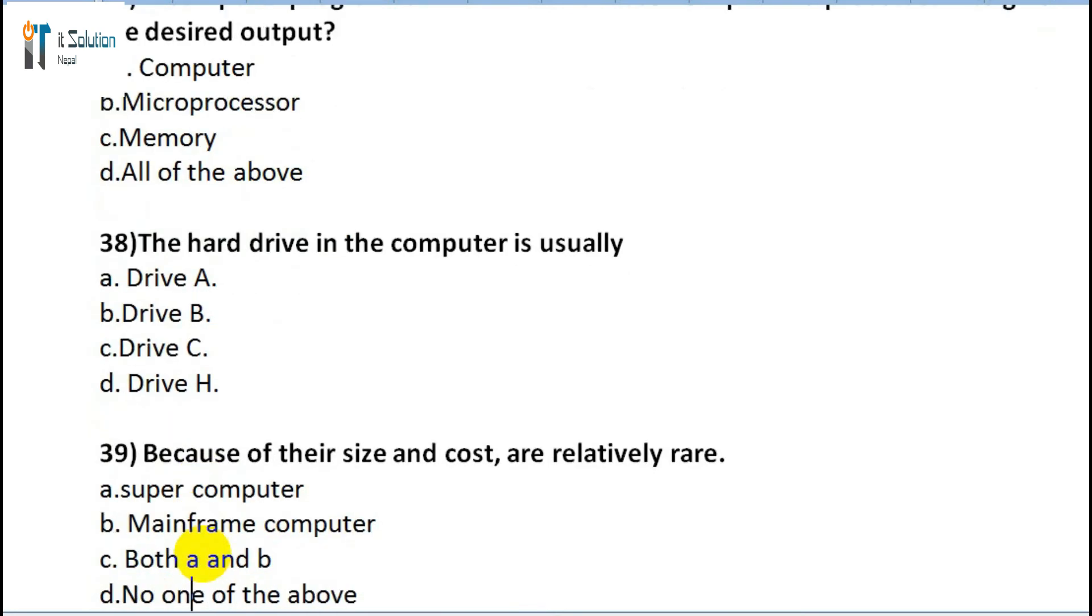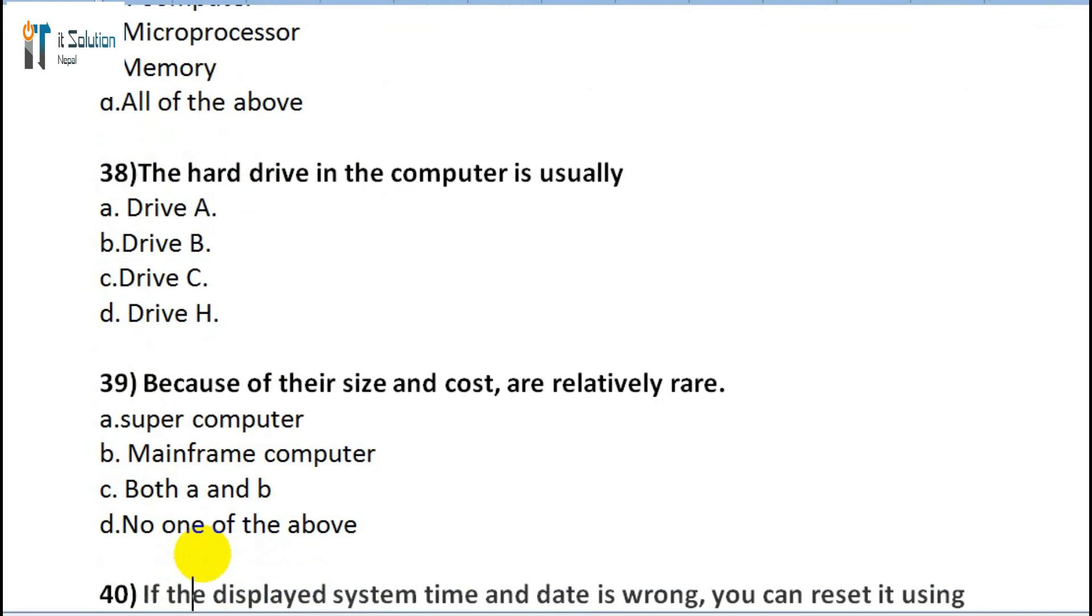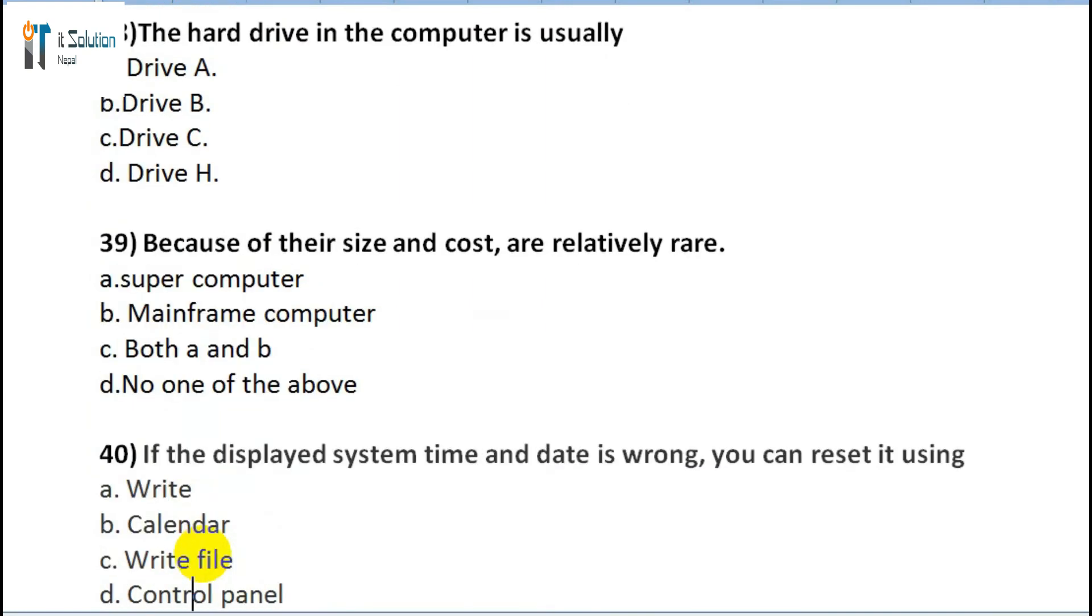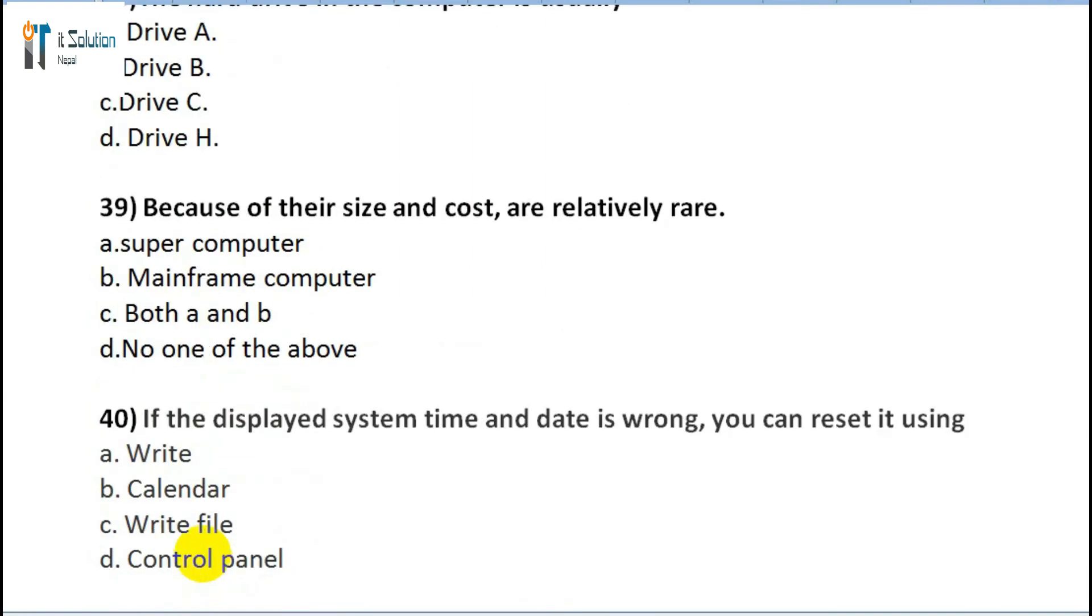Question 39: Because of their size and cost, ___ are relatively rare. A) Supercomputer, B) Mainframe computer, C) Both A and B, D) None of the above. Question 40: If the displayed system time and date is wrong, you can reset it using: A) Write, B) Calendar, C) Write file, D) Control panel.